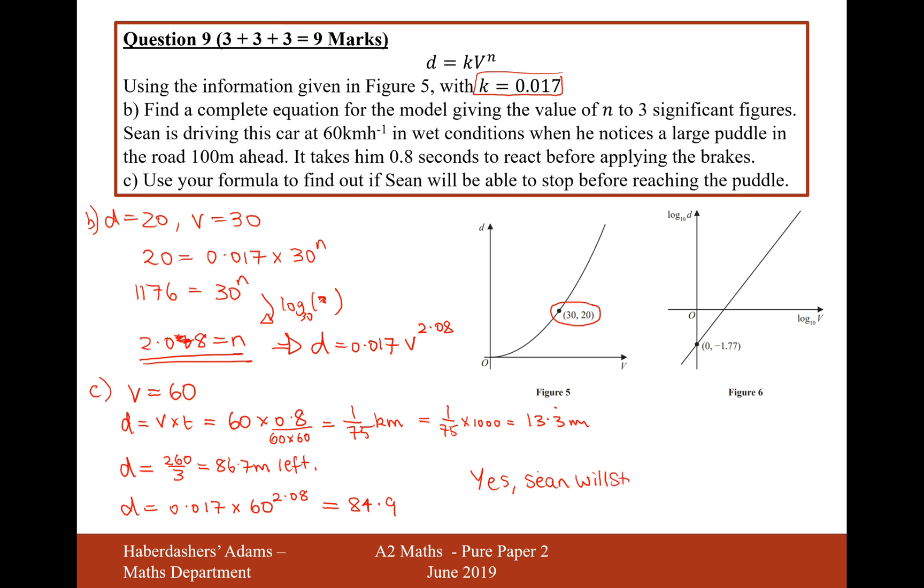Sean will stop. And we could even work out how far he would be away from the pothole. So it would be 260 over 3 minus the answer, which is 1.75 meters from the pothole. So there we are, that's the answer for question 9 there. A nice exponential modeling question. Let's now move on to question 10.